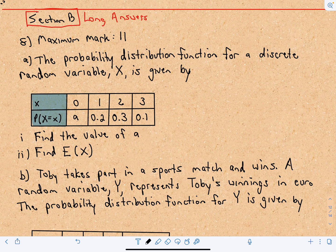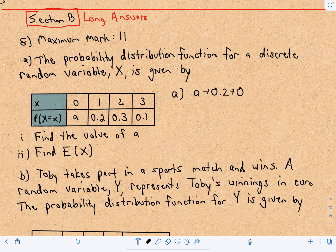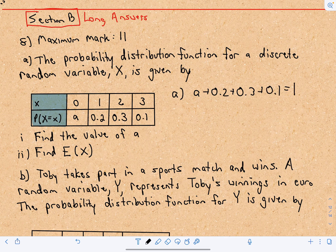To find the value of A, we know that the sum of these probabilities has to equal 1, so that'll be our solution for part A. We've got A plus 0.2 plus 0.3 plus 0.1, that has to equal 1.